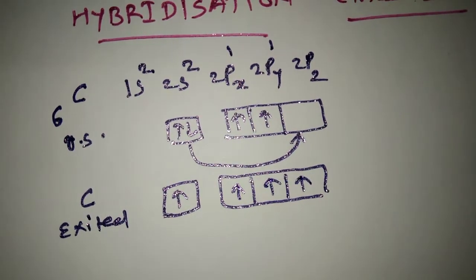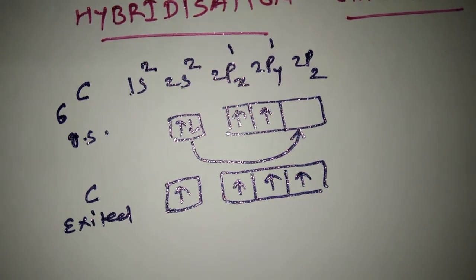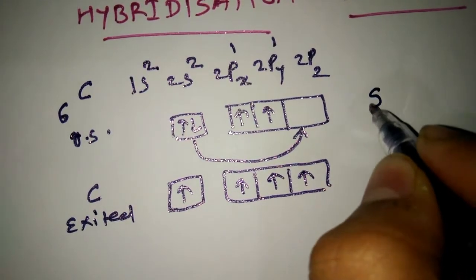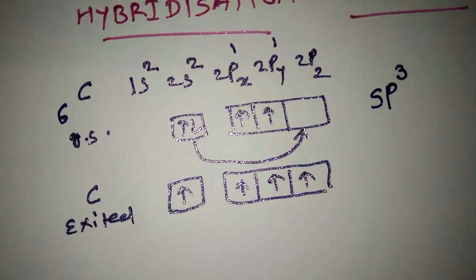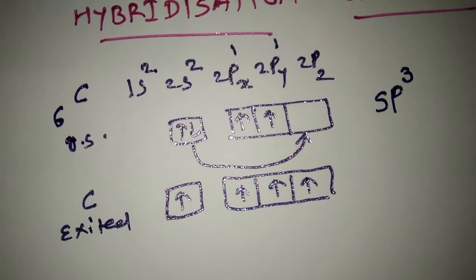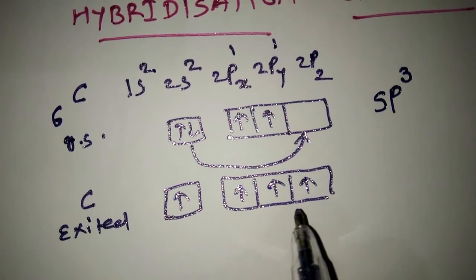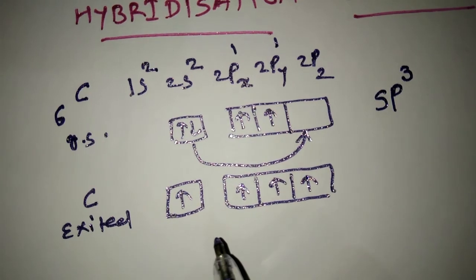In hybridization, first let's explain sp3 hybridization. In sp3 hybridization, one s orbital and three p orbitals take part in hybridization.